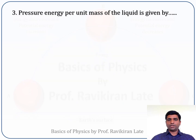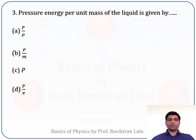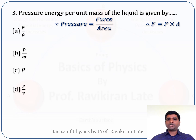The next question: pressure energy per unit mass of a liquid is given by which expression? The options are: A - p/ρ, B - p/m, C - p, D - p/v. We can solve this by two different methods. First method: pressure is force upon area, so force equals pressure times area.